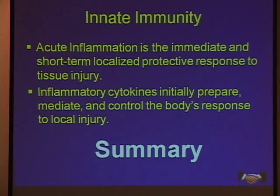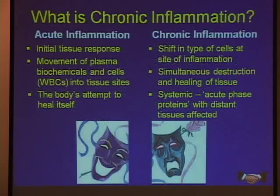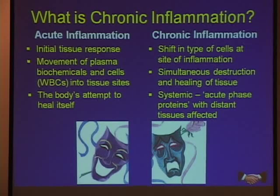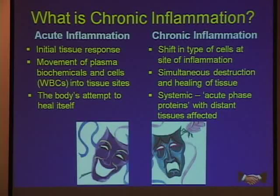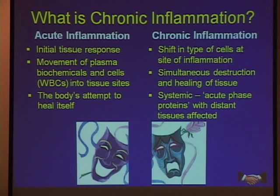In summary, innate or inborn immunity is an acute inflammation — an immediate, short-term localized protective response to tissue injury. Inflammatory cytokines initially prepare, mediate, and control the body's response to local injury. We want that; it's necessary for life. The problem is the Jekyll and Hyde aspect: while acute inflammation is the primary and initial response to a problem, the question is what happens when it becomes chronic — when it persists and stays too long.